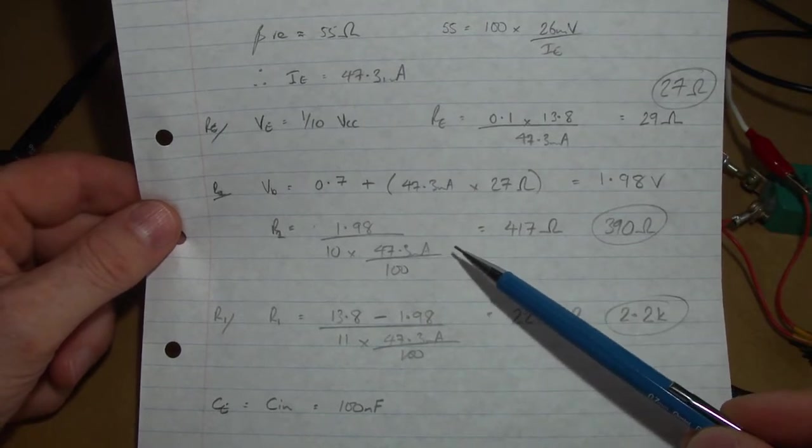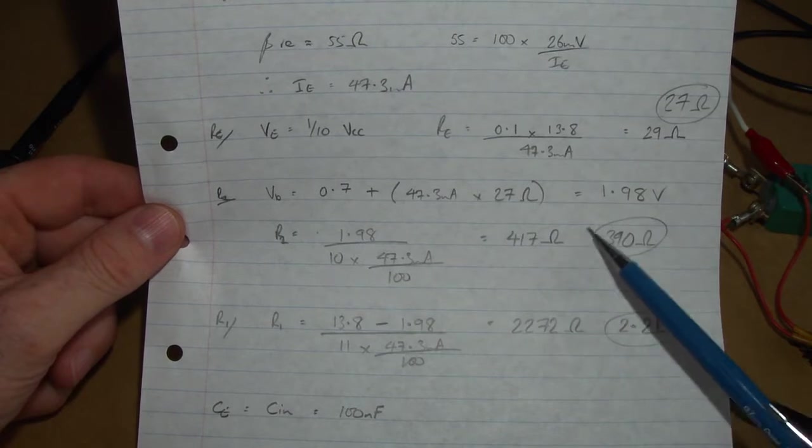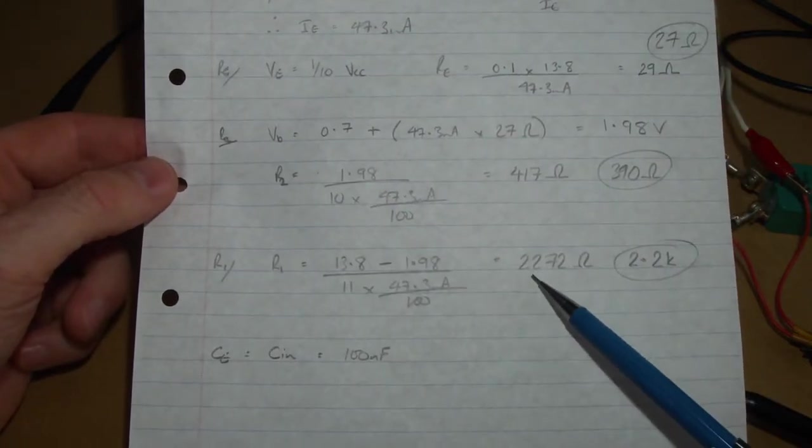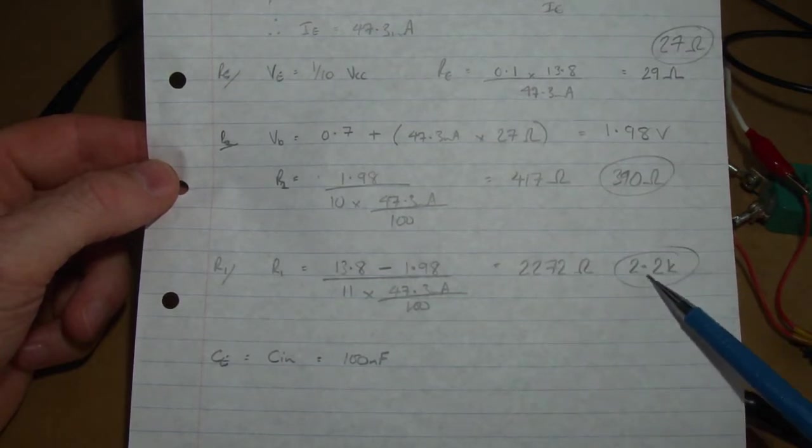They turned out to be for R2, the lower one, 417 ohms, which I'll just use 390 as the nearest standard value. And then for R1, turned out to be 2272, so just using a 2.2k.